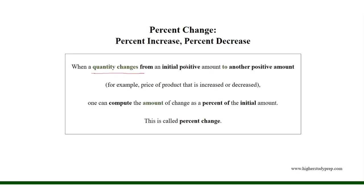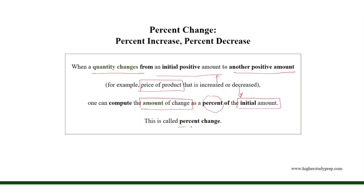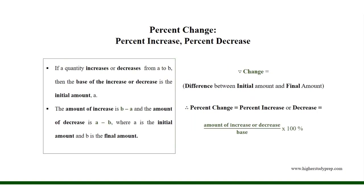When a quantity changes from an initial positive amount to another positive amount — for example, the price of a product that is increased or decreased — one can compute the amount of change as a percent of the initial amount. If a quantity increases or decreases from A to B, then the base of increase or decrease is the initial amount A.